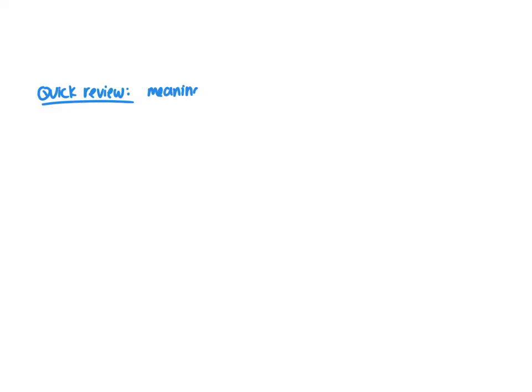So partial derivatives is what we're talking about today. We're going to do a little bit of a quick review. What I want to review is what is the meaning of the derivative. This is a time for audience participation. Meaning of a derivative? The slope at a given point. Yeah, the slope of the tangent line, the slope at a point on the curve.